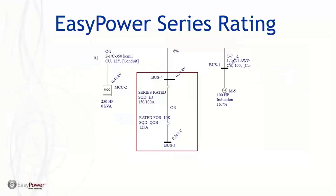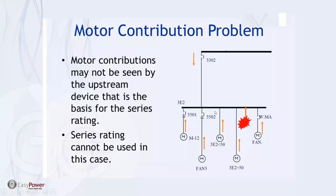With the 100,000-amp rating, going back to short circuit and faulting the bus, we see equipment duty is no longer a problem. However, there's an important caveat: when we have motor contribution, the fault on a feeder will see current not only through the main breaker but also contribution from other motors. In that case, its exposure will be more than limited by the upstream breaker, so series rating cannot be used.